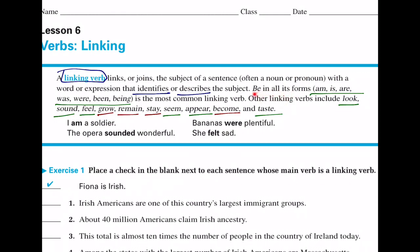So remember these three different categories of linking verbs. States of being — that's be in all its forms: am, is, are, was, were, been, being. Transformations, such as growing, becoming, or even remaining or staying the same. As well as the sensory linking verbs: looking, sounding, feeling, seeming, appearing, or tasting.